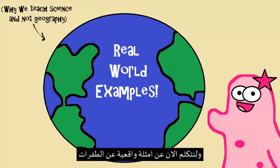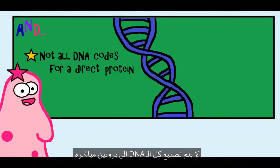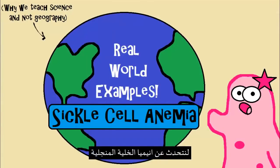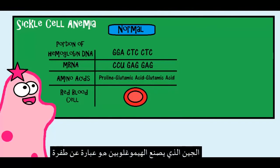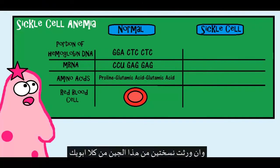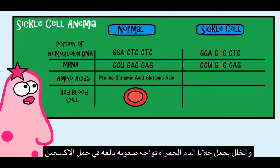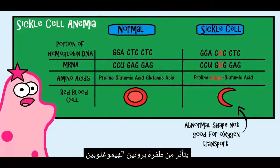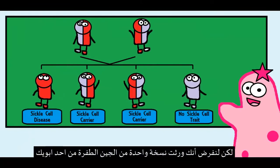Let's talk about some real-life examples of mutations. Remember, many mutations can have a neutral effect, and not all of your DNA codes for a direct protein. Let's talk about sickle cell anemia. Hemoglobin is a protein in your red blood cells that helps carry oxygen. In sickle cell anemia, the gene that codes for hemoglobin is mutated. If you inherit two copies of this mutated gene — one from each parent — you can have this disorder, which makes it very difficult for your red blood cells to carry oxygen, leading to anemia and other problems.